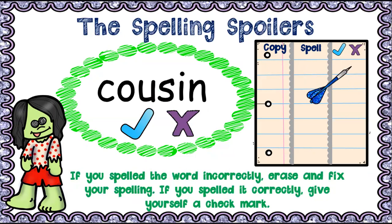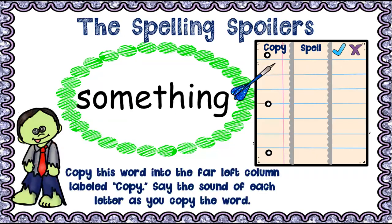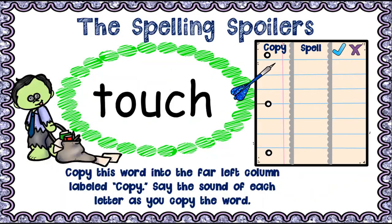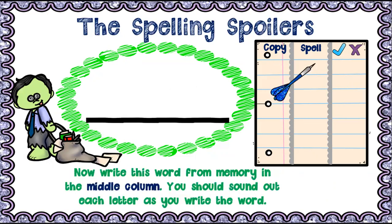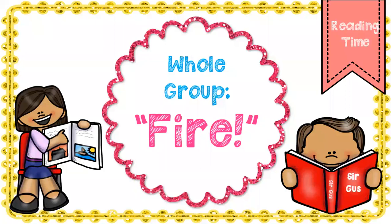Number nine — 'something.' If you got it correct, bubble 'yes'; if incorrect, bubble 'no' and copy it correctly. And the last one — don't get beat by your spelling spoilers — write the word 'touch.' Check your answer — is it correct?